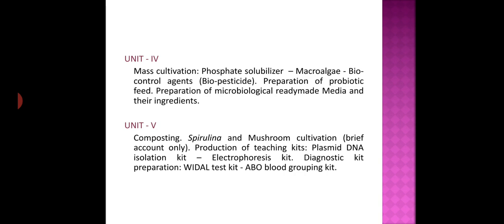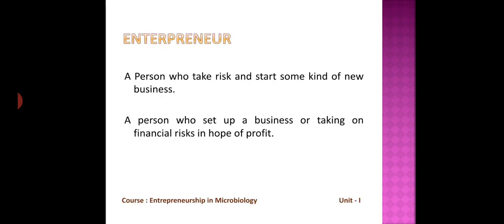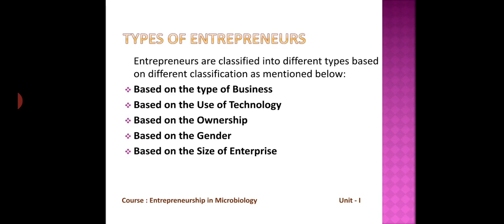Unit 5 also includes the VDRL and ABO blood grouping kit. Entrepreneur means 'tholil munevore' — a person who takes risk and starts some kind of new business, or a person who sets up a business taking on financial risk in hope of profit.